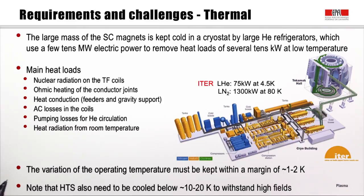The operating temperature must be kept within a margin of 1 to 2 degrees Kelvin. Even for high-temperature superconductors, cooling below 10 to 20 K is required to withstand high fields and achieve good current densities.